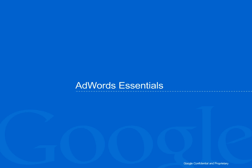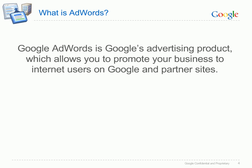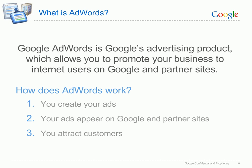The AdWords essentials — a few things you should know before you create your account. So what is AdWords? AdWords is Google's advertising product which allows businesses large and small to promote their products and services on Google and on our partner network. But how does it work? Firstly, you create your ads and choose keywords, which are words or phrases related to your business. Then your ads appear on Google and partner sites. When people search on Google using one of your keywords, your ad may appear next to the search results, so you're advertising to an audience that's already interested in what you have to offer. Then you attract customers — people can simply click on your ad to visit your website, make a purchase or learn more about you.